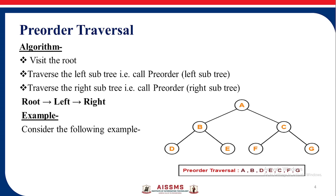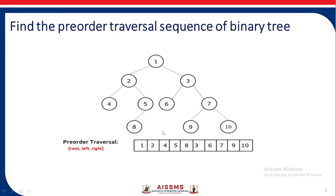Consider this example: if we want to find out the pre-order traversal of the binary tree given to us, we first take the root which is A, then go to the left subtree — again root, left, right — that is B, then D, E. Then in the pre-order traversal we move on to the right side of the root, that is the right subtree. We traverse it again as root, left, right — that is C, F, G. So the pre-order traversal we get is A, B, D, E, C, F, G.